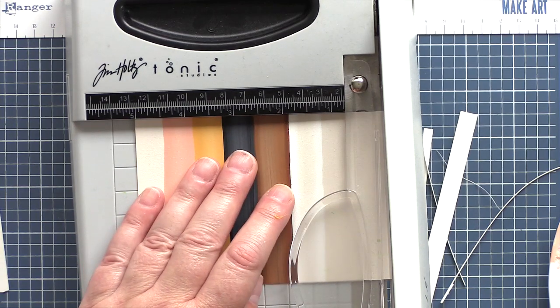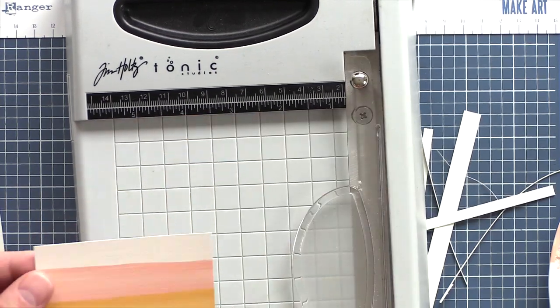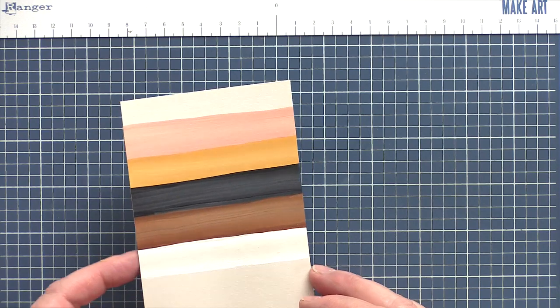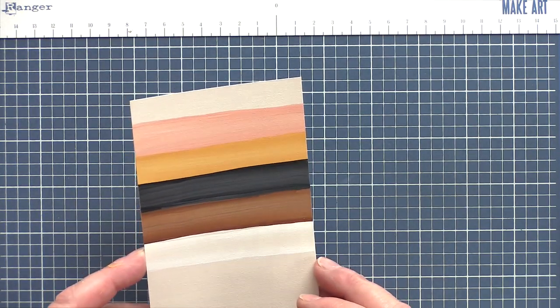Once I dried the panel for the last time, I removed the painter's tape and trimmed the piece down to 3.5 by 5 inches in line with a 4 bar size card.